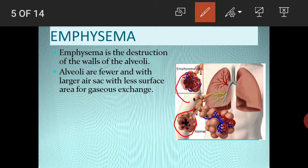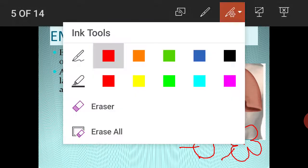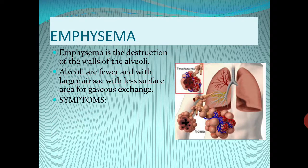In the diagram, you can see normal alveoli with intact walls compared to emphysema, where the walls break down and form a large sac with less surface area. In emphysema, the air cannot be pushed out and becomes trapped in the lungs.